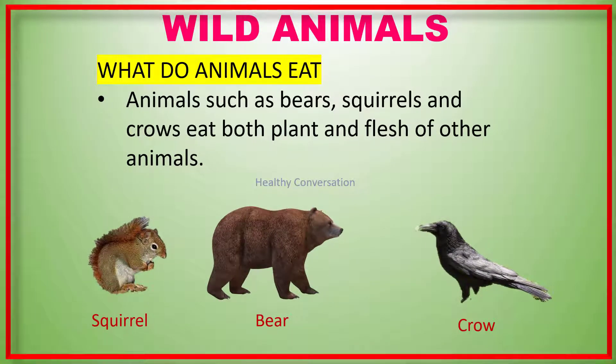Animals such as bears, squirrels, and crows eat both plants and the flesh of other animals. These animals are known as omnivores.